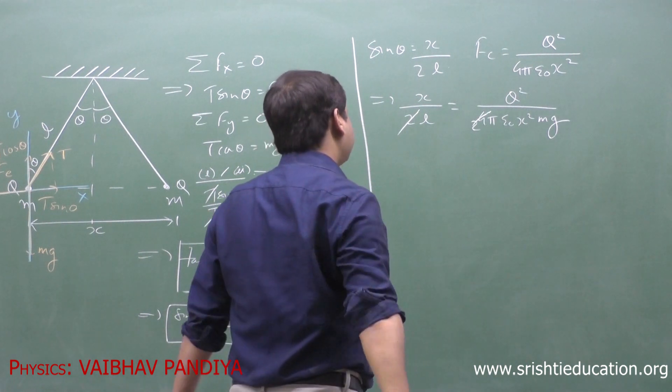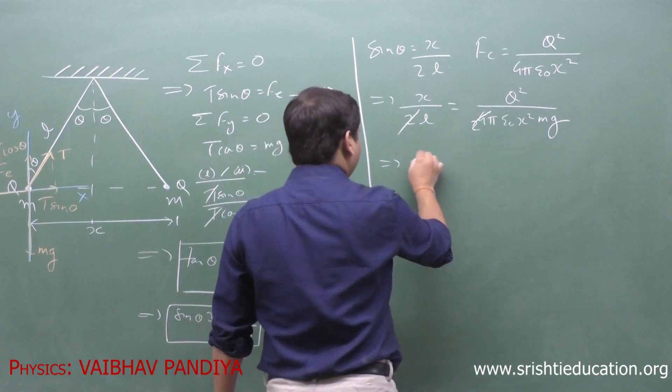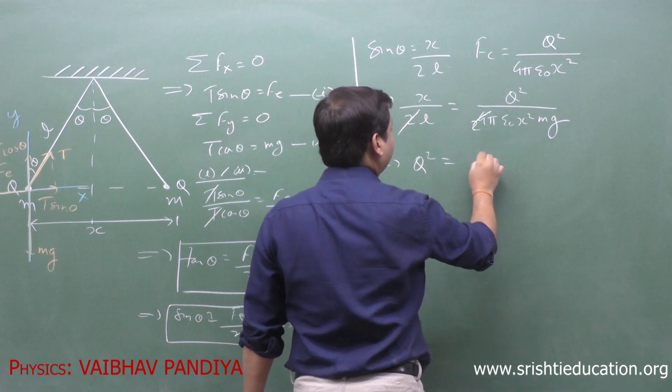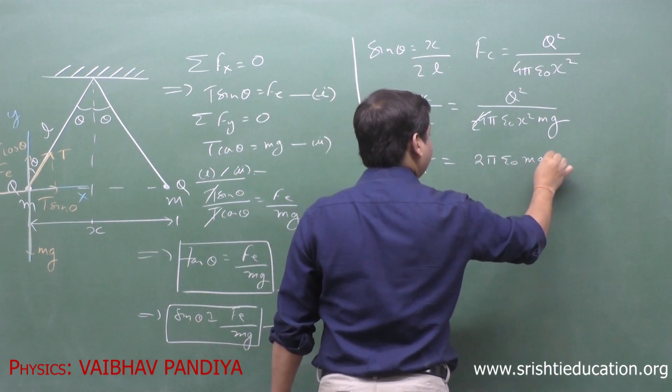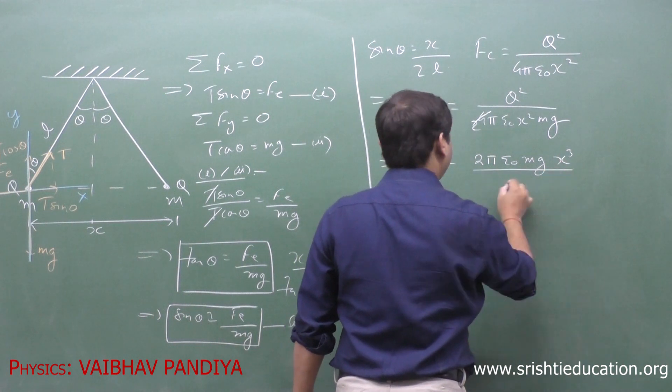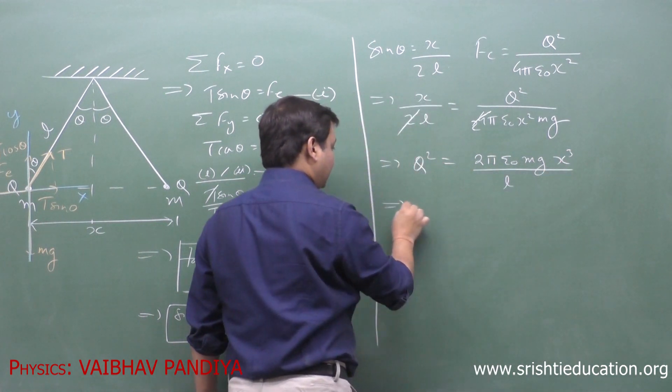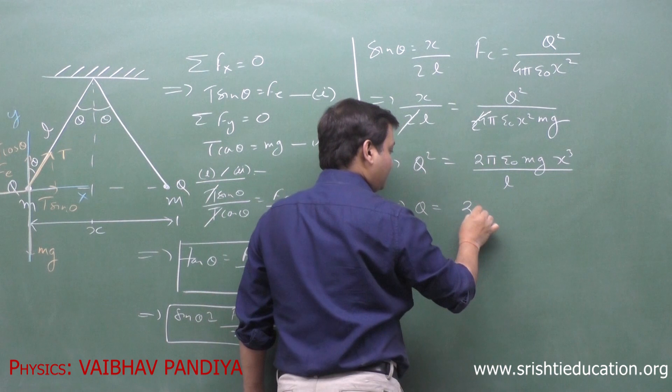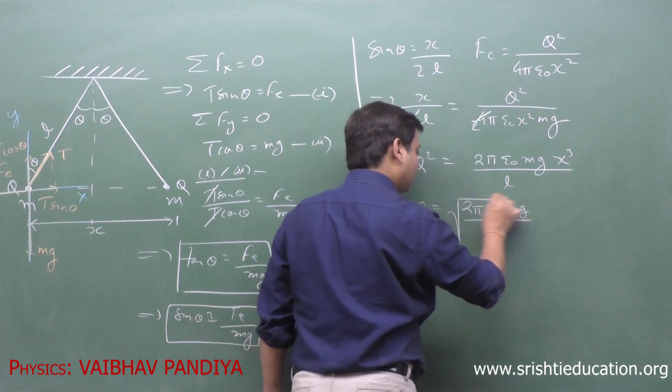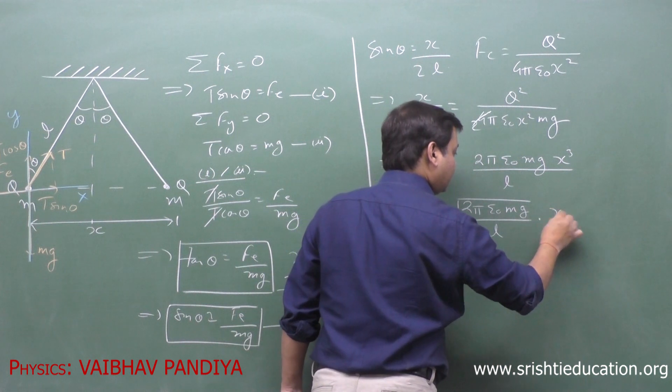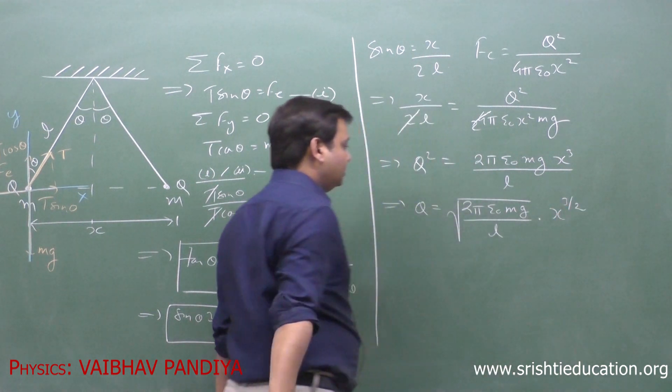Now, if I make Q the subject, I will get Q squared to be 2 pi epsilon naught Mg X cube divided by L. So I will have Q as square root of (2 pi epsilon naught Mg by L) into X to the power 3 by 2.